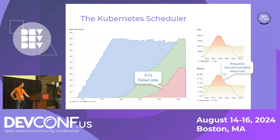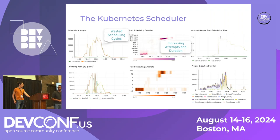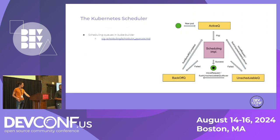The results were pretty bad. Only 51% of jobs completed. As new jobs were created, Kubernetes basically immediately tried to schedule them. On the left side, you can see we were greatly over-committed in terms of CPU and memory requests. Looking at scheduler metrics, we were really abusing it — lots of pod scheduling attempts, lots of scheduling cycles, and a large pending pods queue that the scheduler was repeatedly trying to resolve.